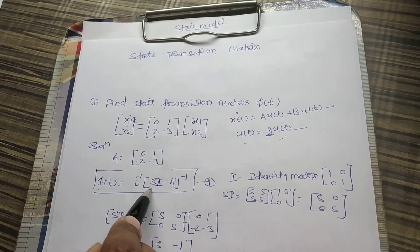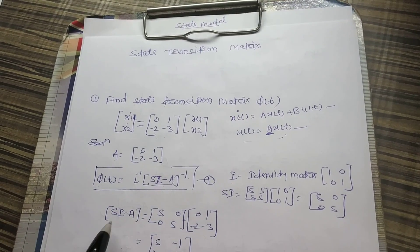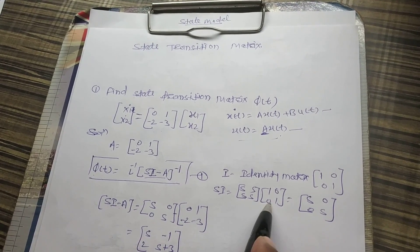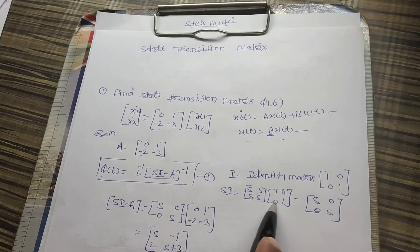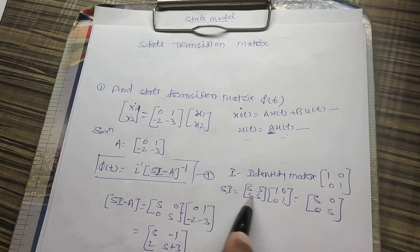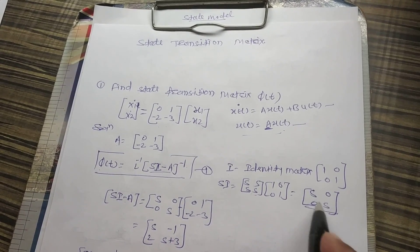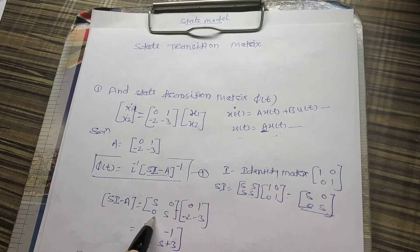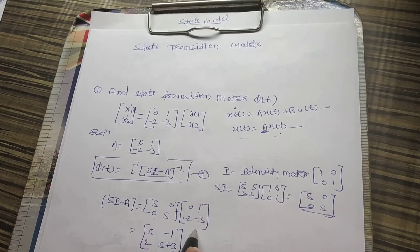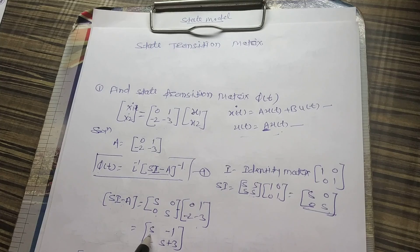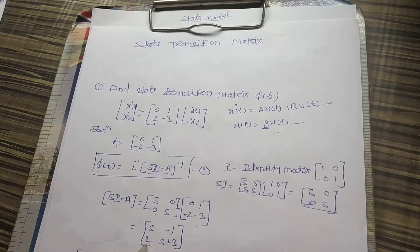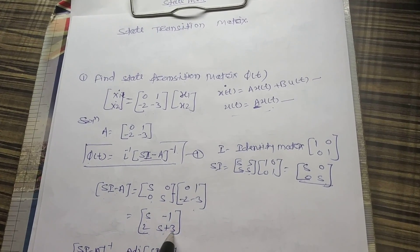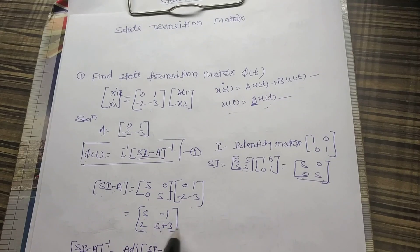First we will find sI minus A. Here we multiply s by the identity matrix, giving the diagonal matrix [s, 0; 0, s]. Then sI minus A gives us the matrix [s, -1; 2, s+3] — since minus of minus 2 becomes plus 2, and minus of minus 3 becomes s plus 3. So sI minus A equals [s, -1; 2, s+3].